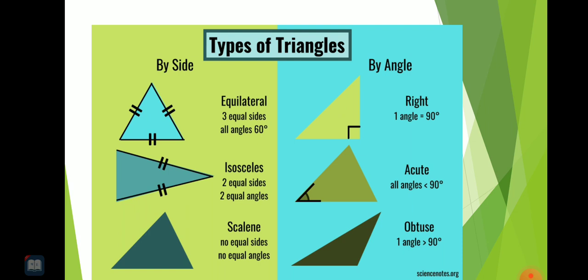Then isosceles triangle has two equal sides and two equal angles. Then in scalene triangle, there are no equal sides and no equal angles.